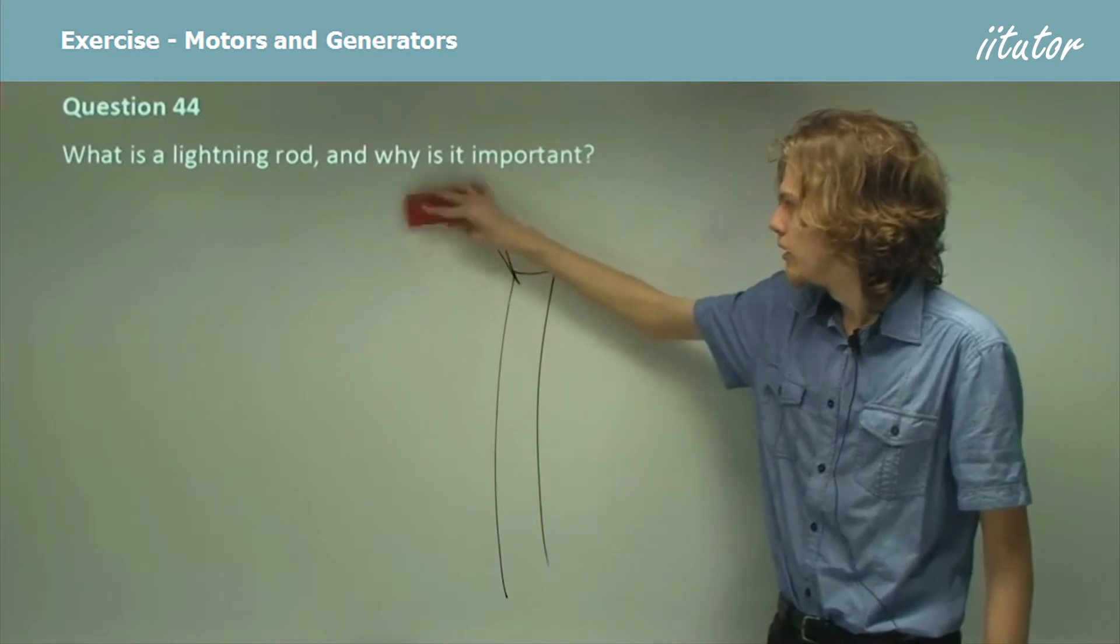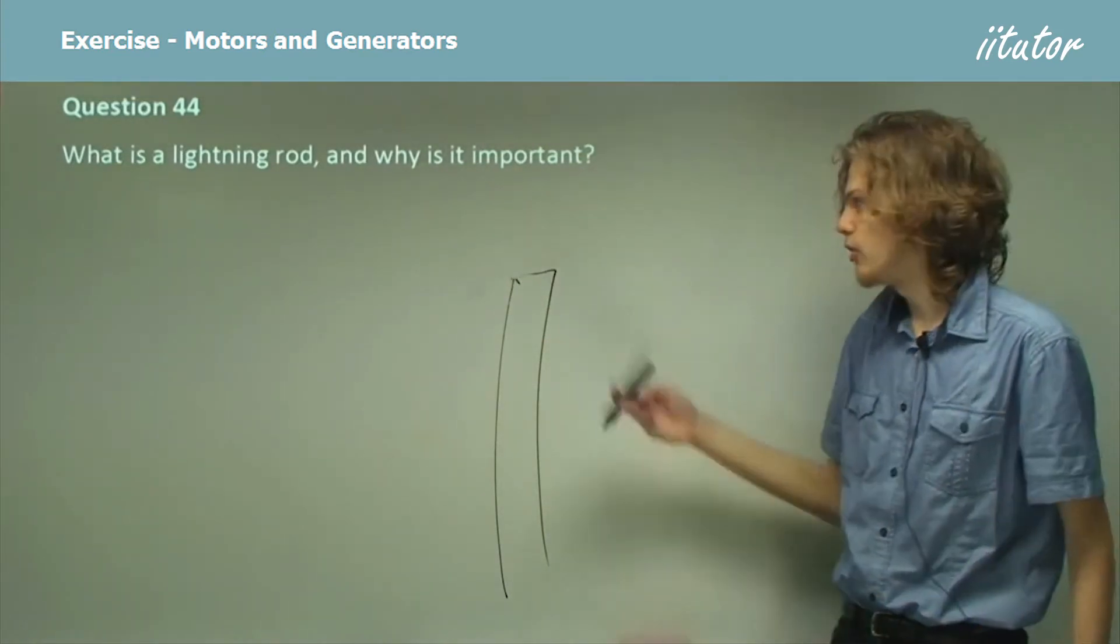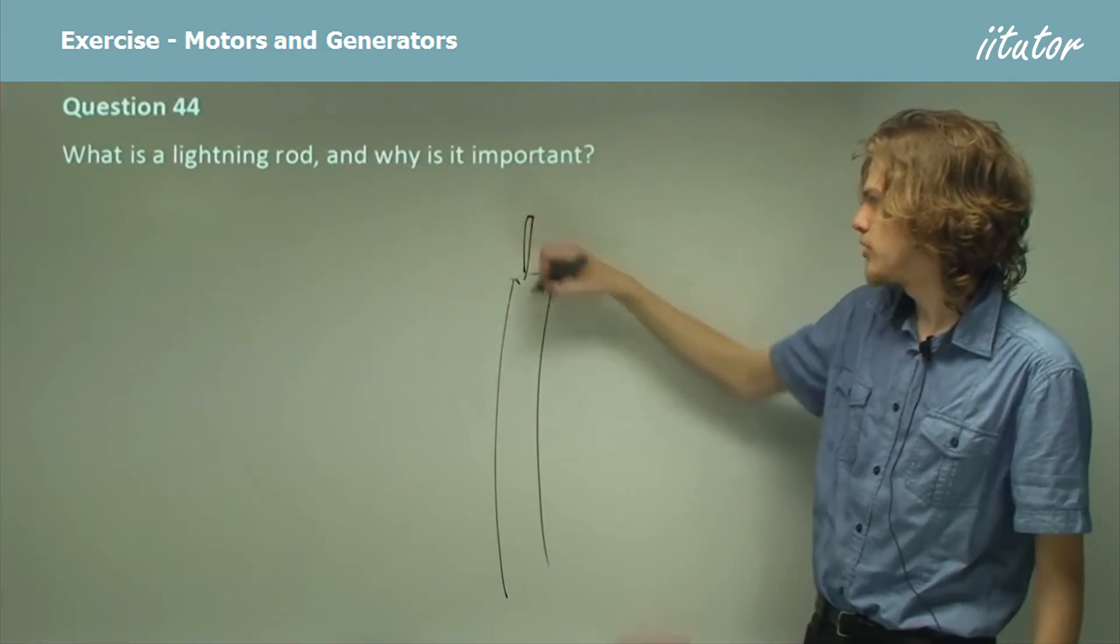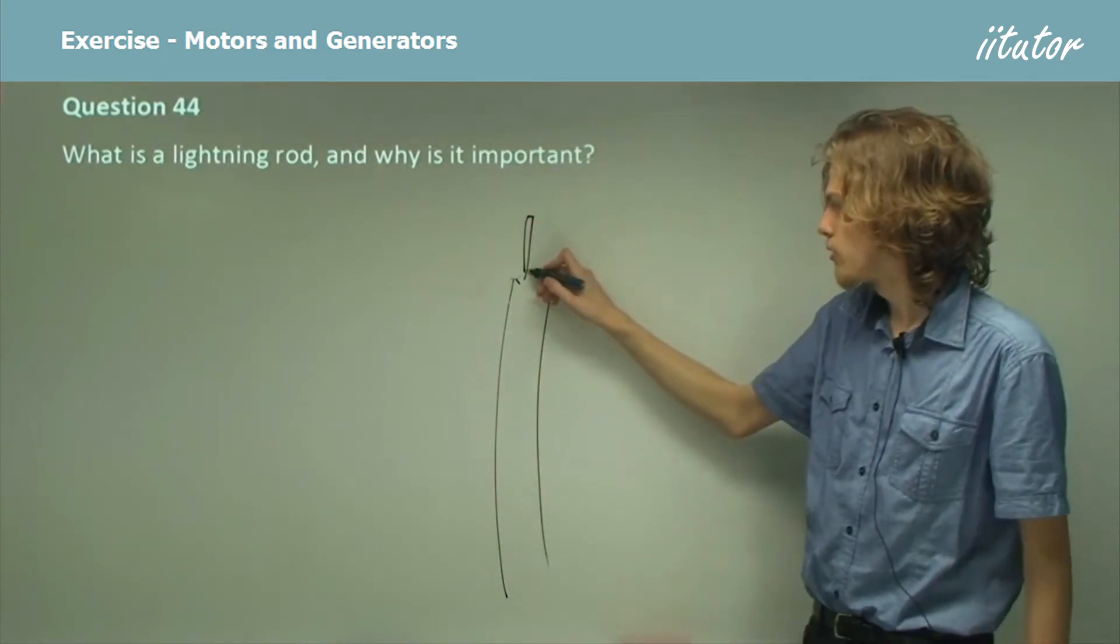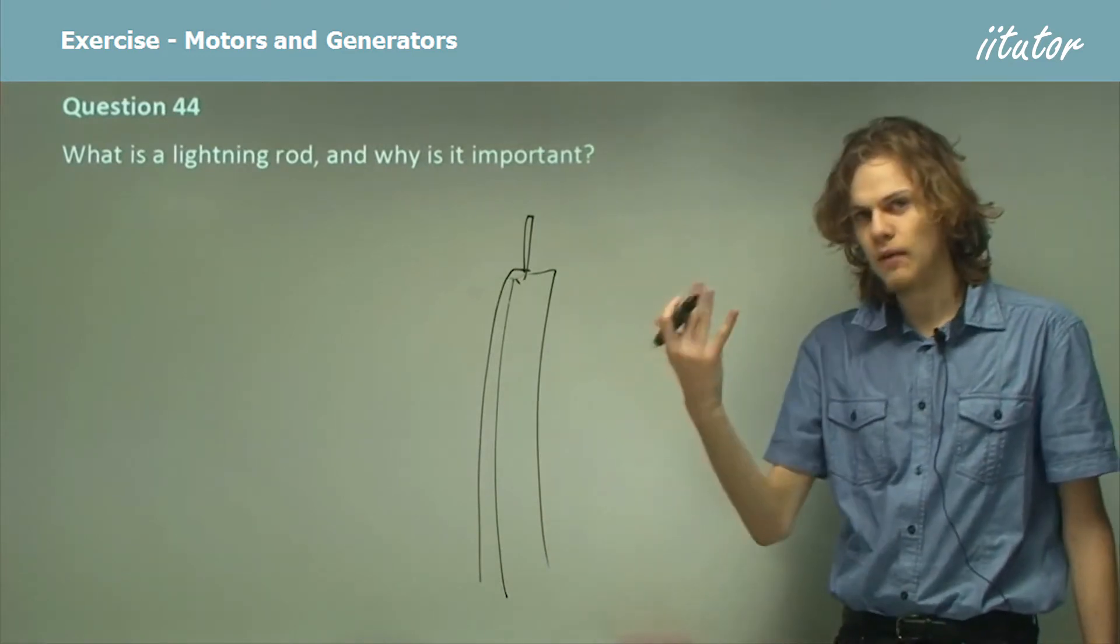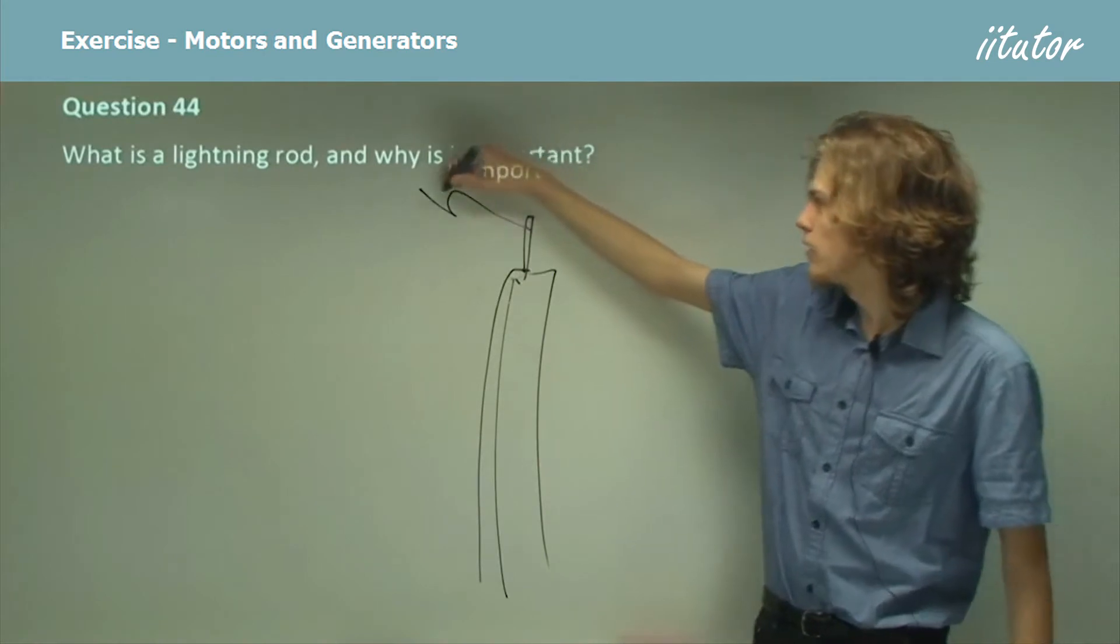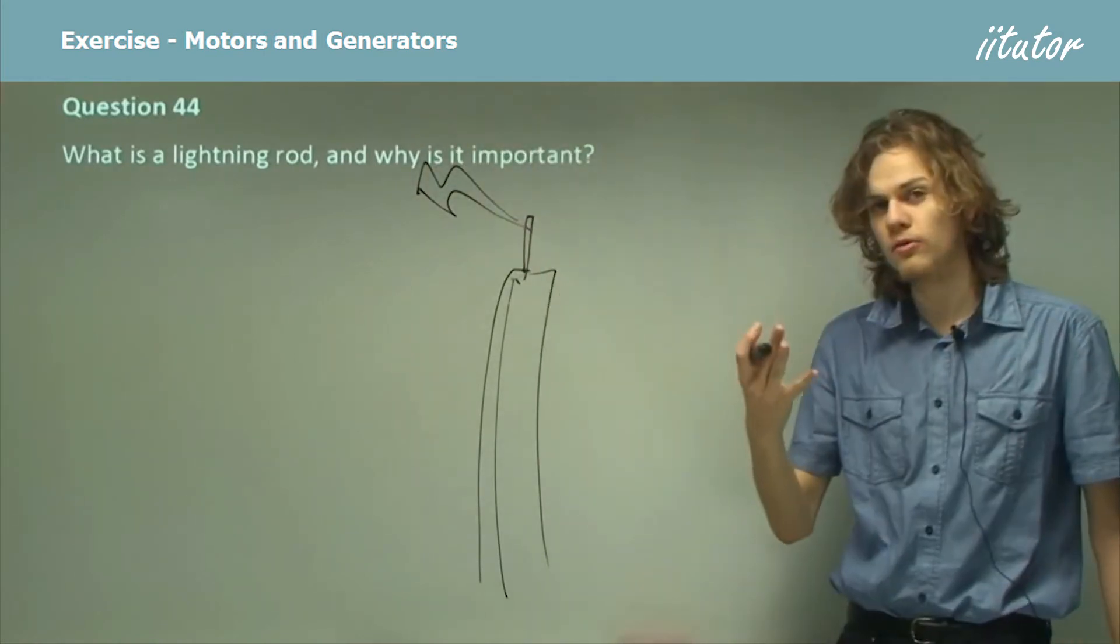So one day, someone had the bright idea of attaching a wire to the top so that the building was even taller and putting the wire straight down to the ground. So when lightning came along and saw the tower, it went oh, I'll strike it, and I'll hit the rod on top because that's the highest point of the tower.